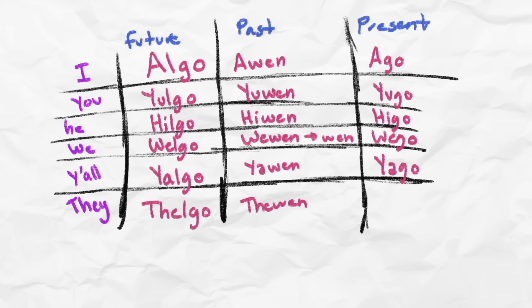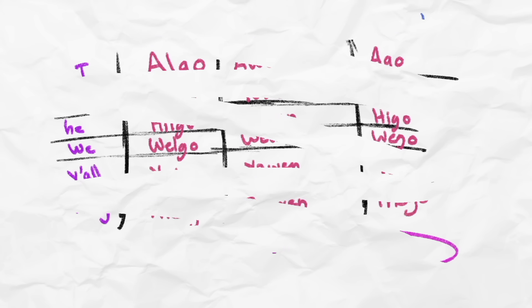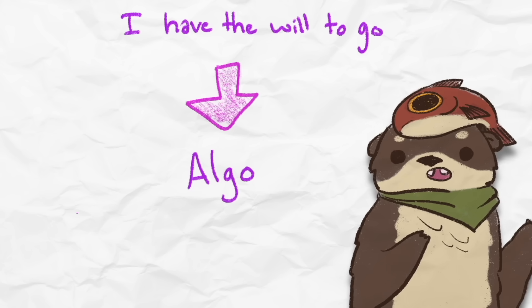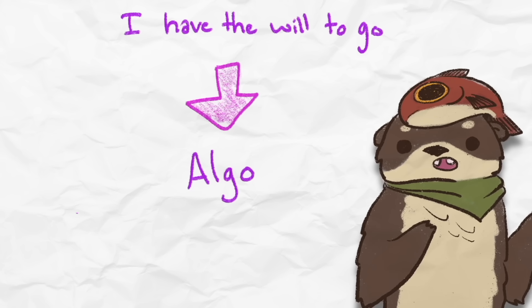Similar to Spanish, the verb tells us both the tense and the subject now. Essentially, English has become more grammatically complex, but less words are needed to convey the same information now. We went from saying I have the will to go to ALGO. Once again, this is purely hypothetical, but this kind of shows how different conjugations can come about.